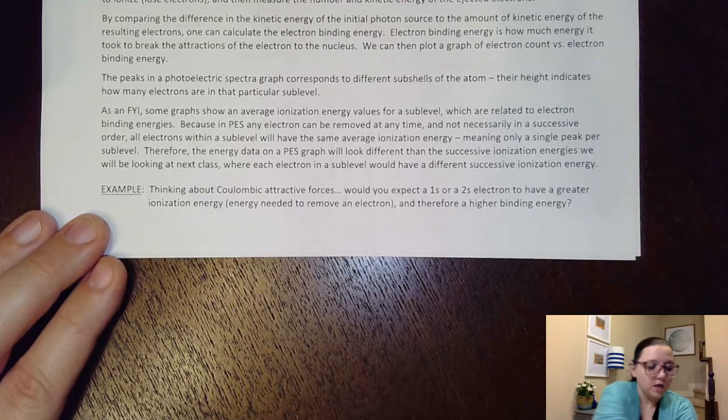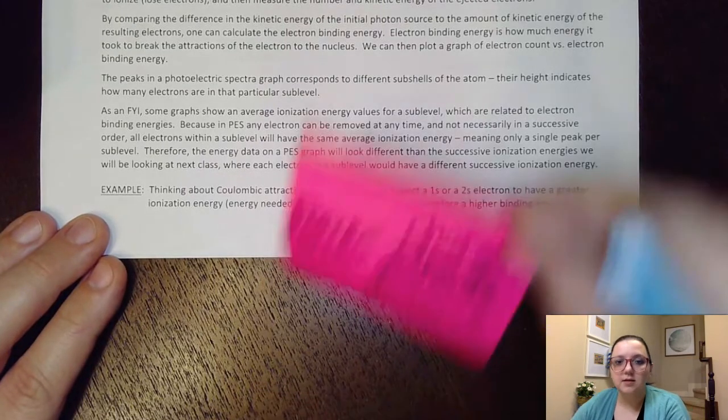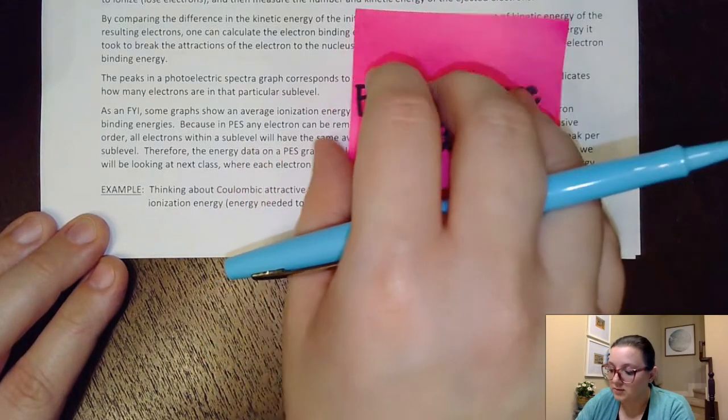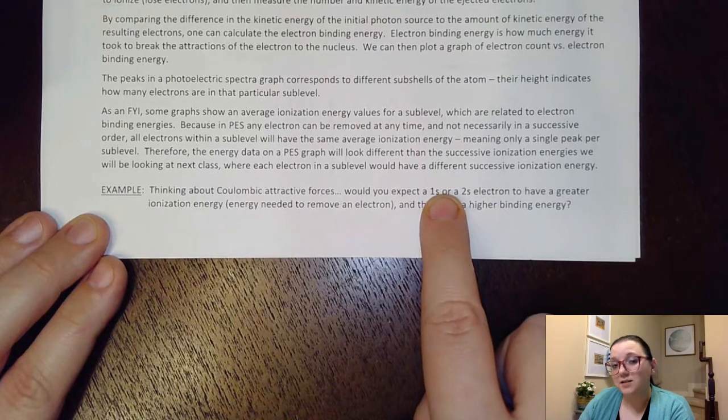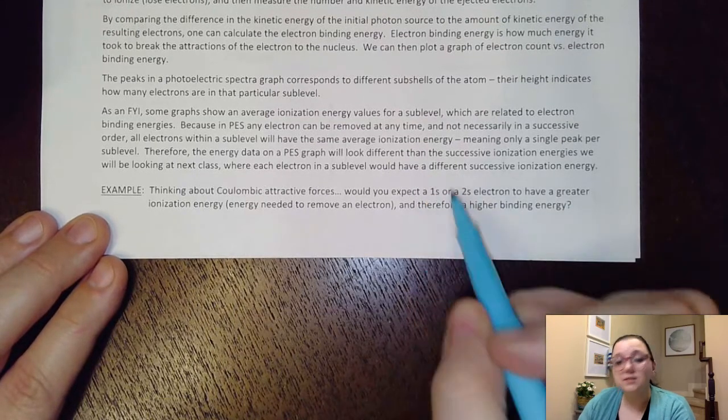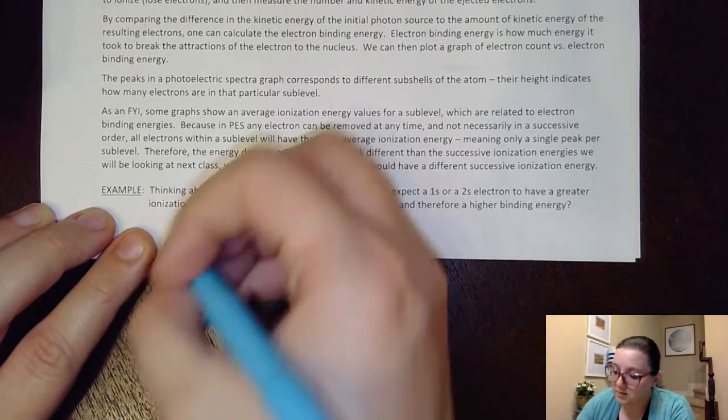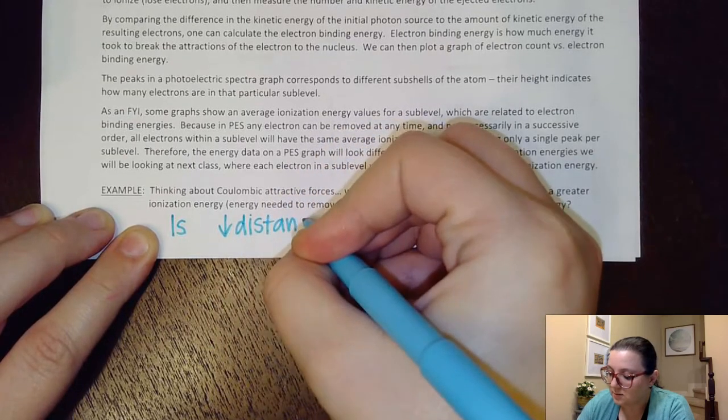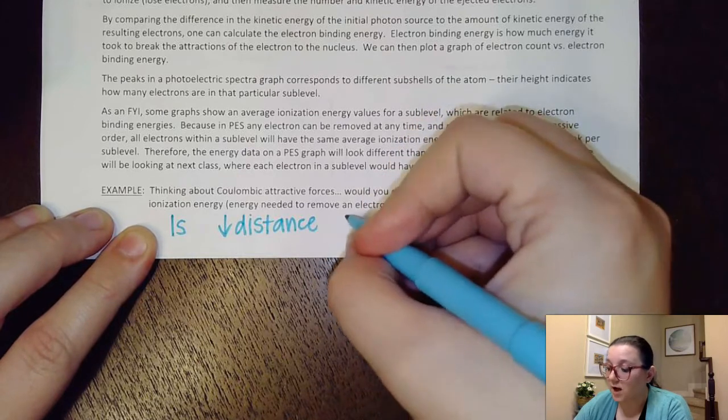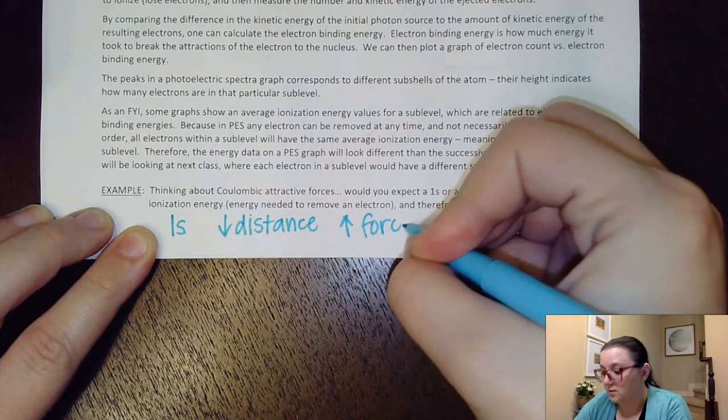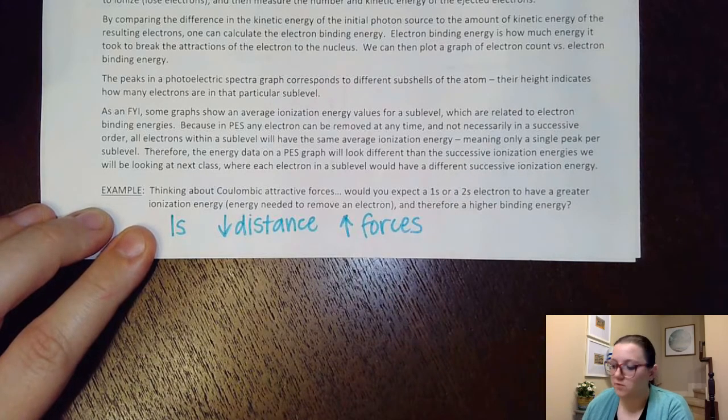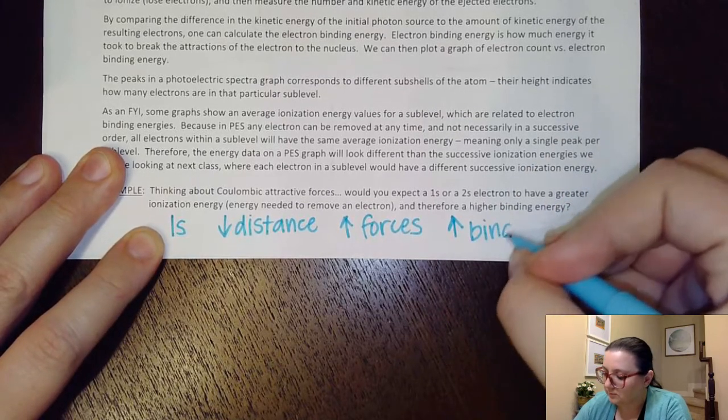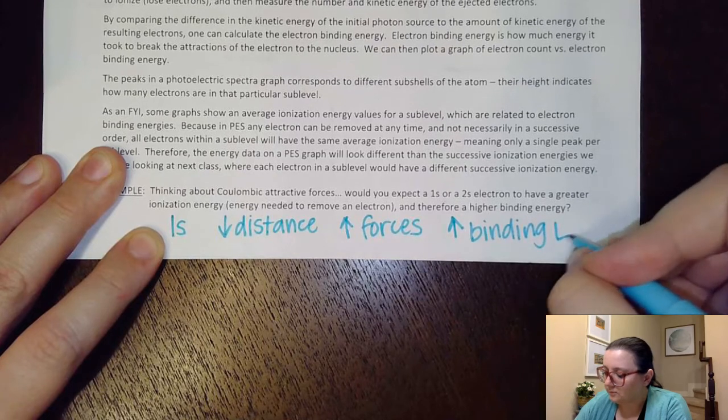Well, if we think back to Coulomb's law, remember Coulomb's law says that force equals charge over distance. So the big difference between 1s and 2s would be that distance component of it. Obviously, the 1s electrons are a lot closer to the nucleus, so their distance would be a lot smaller. So because 1s have a decreased distance from the nucleus, then we can expect them to have higher attractive forces. And if they have higher attractive forces, it's going to take more energy to remove them. So therefore, they would have a higher binding energy.